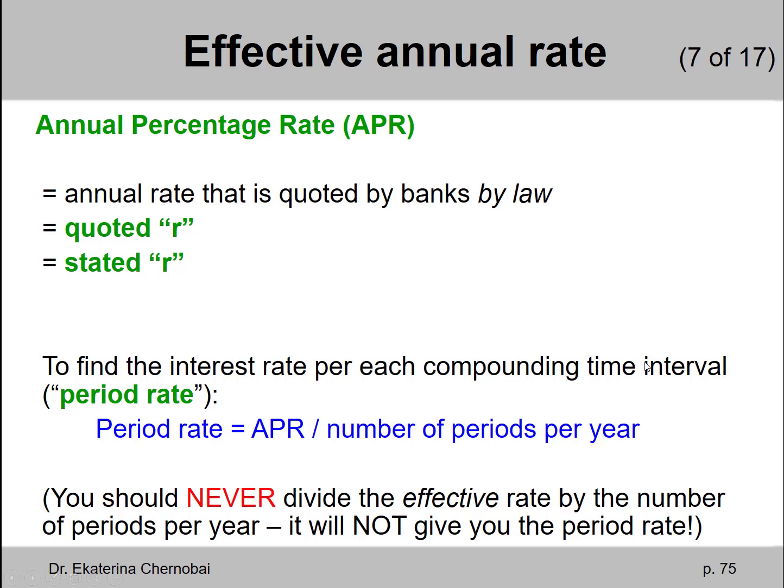To find the interest rate for each compounding time interval, which is the period rate, you take the APR per year and divide by the number of periods per year.